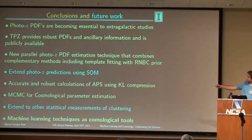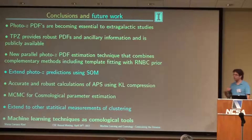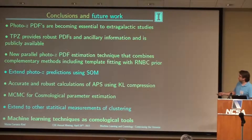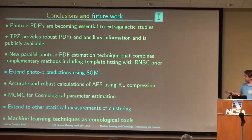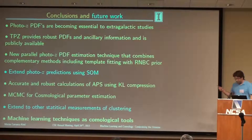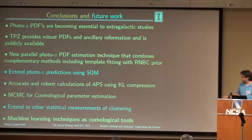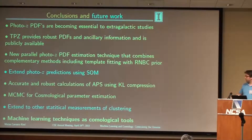In conclusion: photo-z's are becoming very important for extragalactic studies because all current surveys are photometric. We developed TPZ and other techniques to predict distances for this data, and we plan to extend this using a self-organized map. We have a code that accurately and robustly computes the angular power spectrum using KL compression, and we use Markov chain Monte Carlo for parameter estimation. We also plan to extend this to other statistical measurements. Thank you.